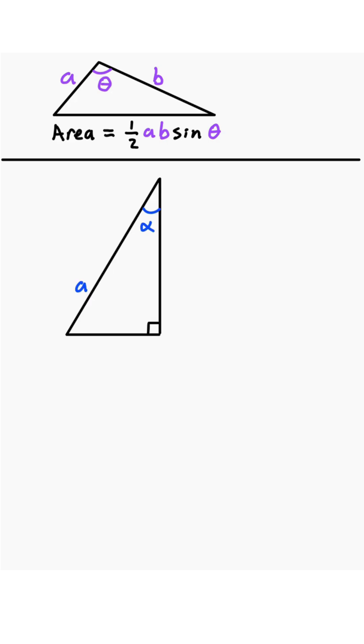Now, suppose we have this right triangle with hypotenuse A and this angle alpha. Then its height is going to be A cosine of alpha.